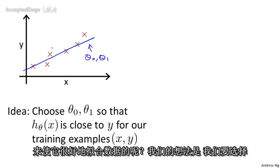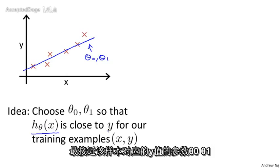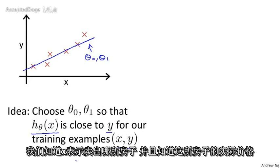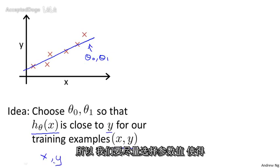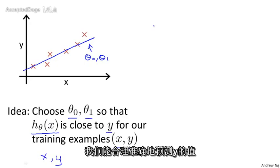The idea is we're going to choose our parameters θ₀, θ₁ so that h(x), meaning the value we predict on input x, is at least close to the values y for the examples in our training set, for our training examples. So in our training set, we're given a number of examples where we know x, the size of the house, and we know the actual price it was sold for. So let's try to choose values for the parameters, so that at least in the training set, given the x's in the training set, we make reasonably accurate predictions for the y values. Let's formalize this.